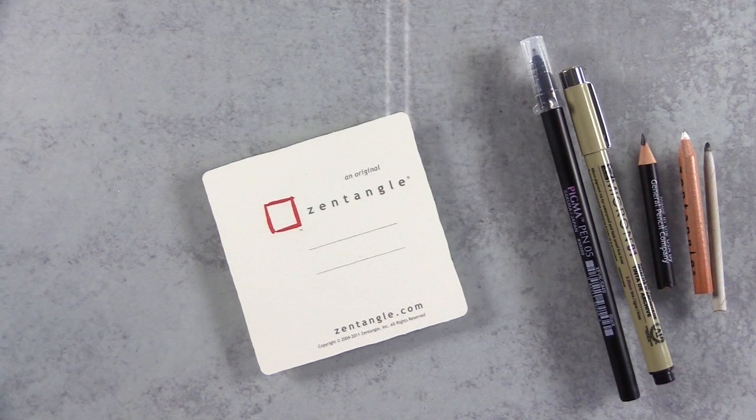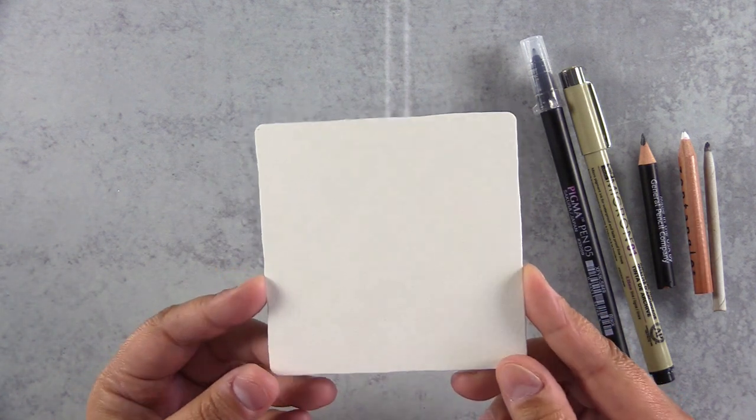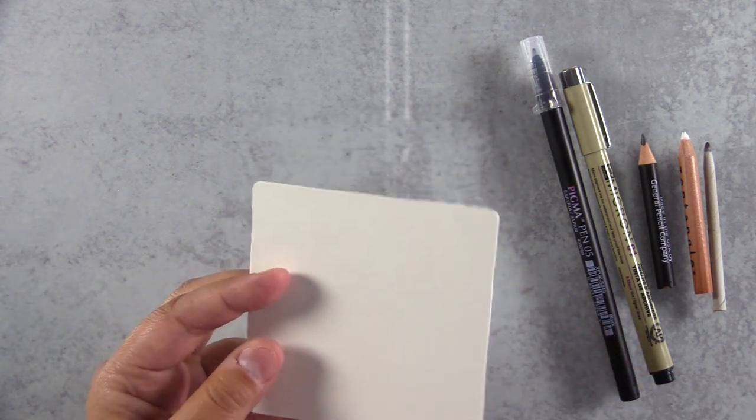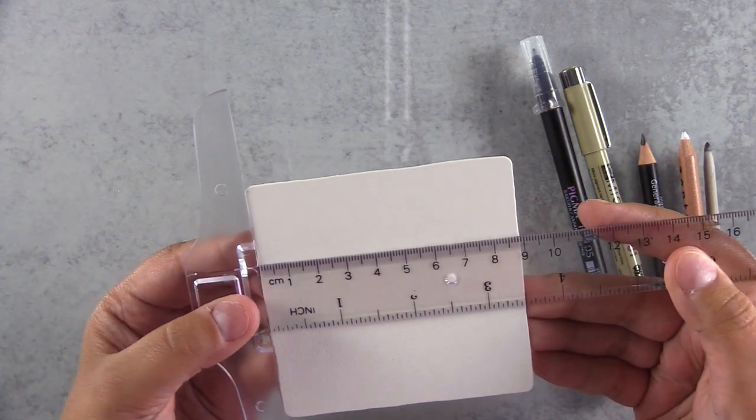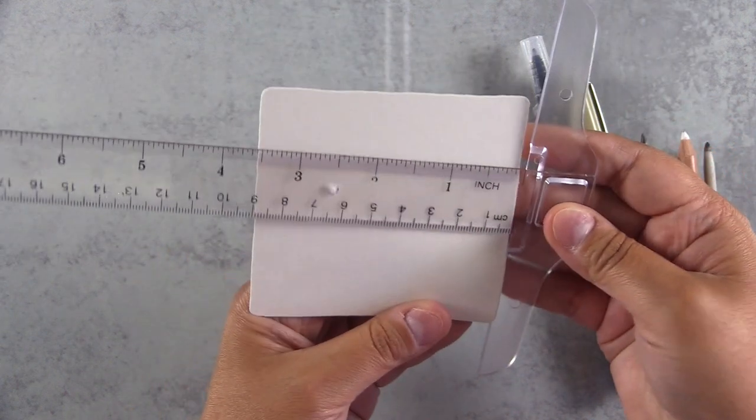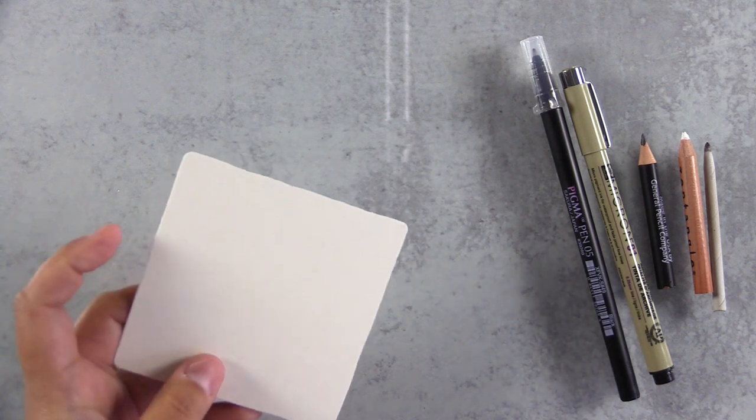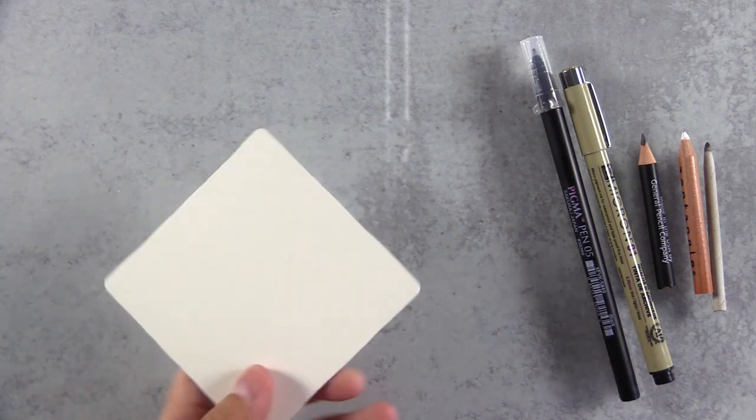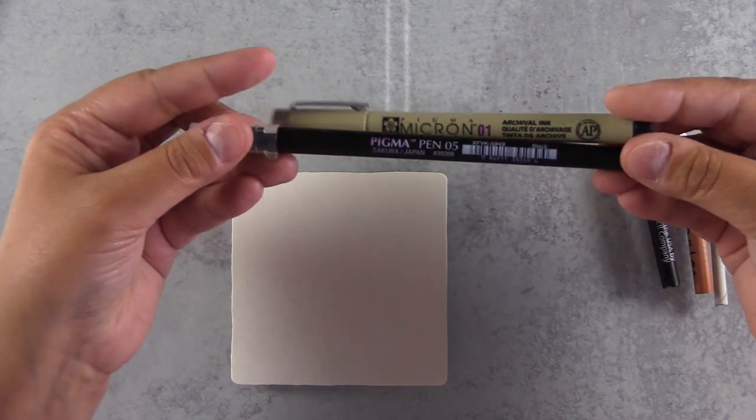As you can see here, I'm going to be doing some Zentangle and I'm going back to my roots and actually using a Zentangle tile today. I can't remember the last time I used one of these tiles. It's three and a half by three and a half inches and it's on Fabriano paper. It's great to Zentangle on. This is an original Zentangle tile and the reason I haven't used these in years is because I've really switched over to tangling on my cards.